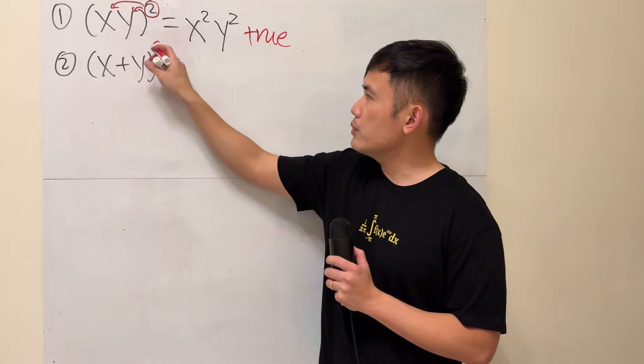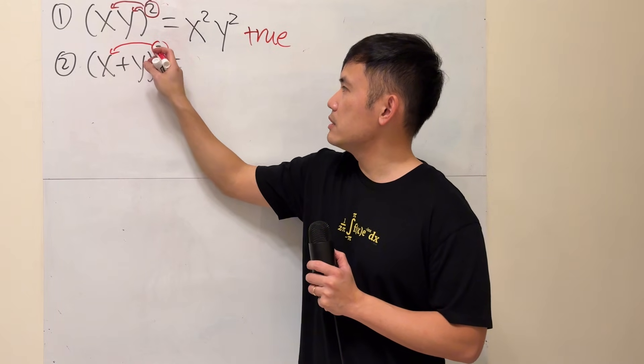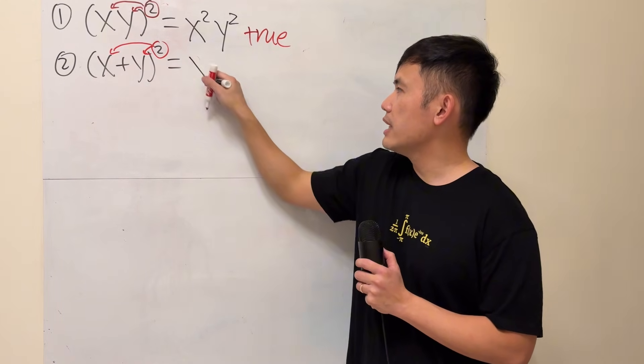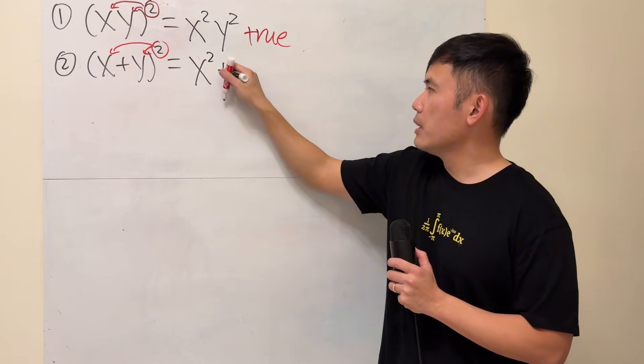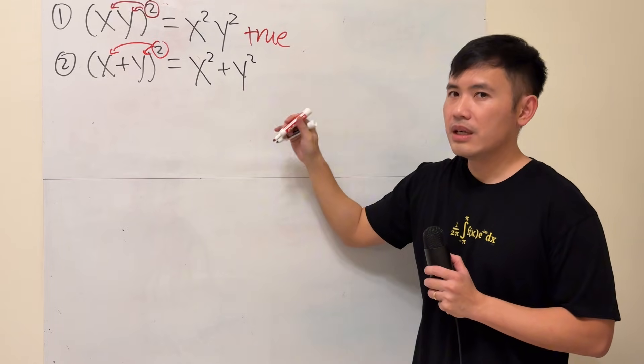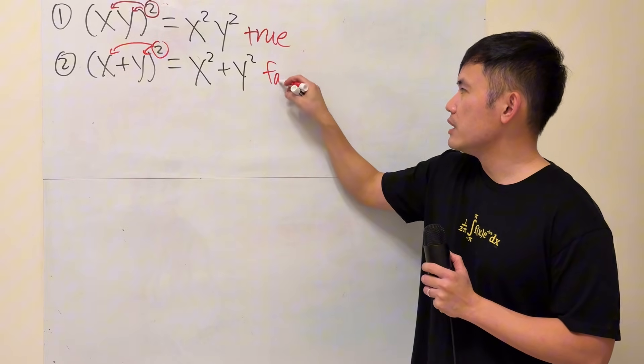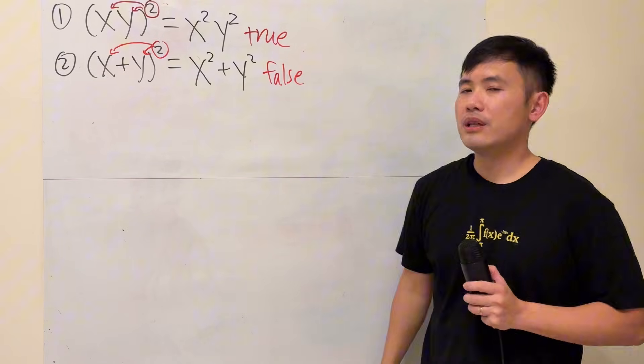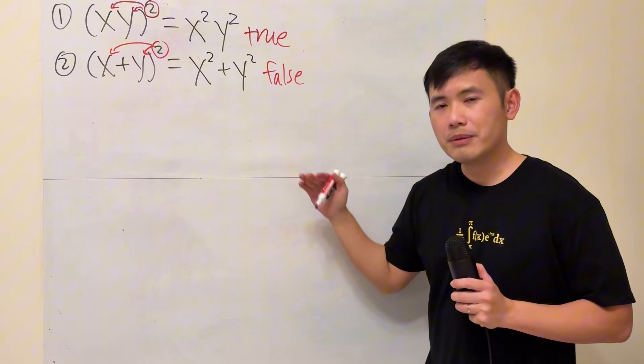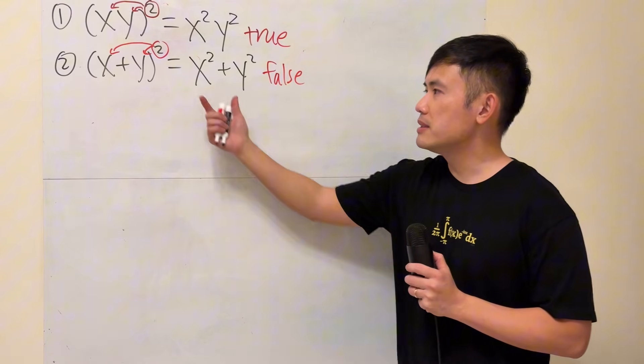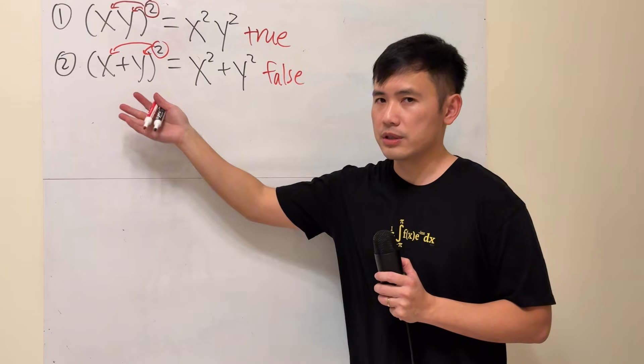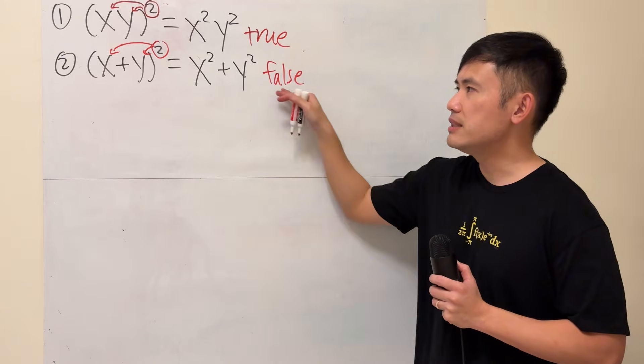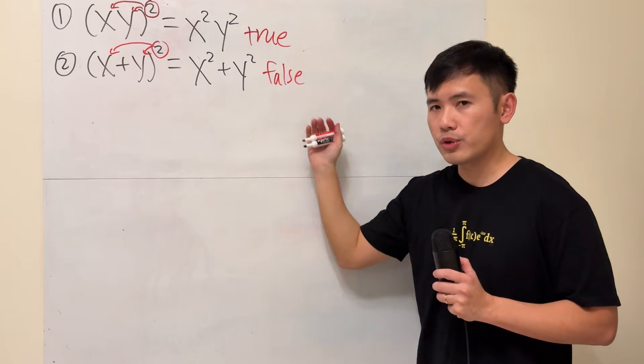However, if you try to do the same thing for the second one, just distribute the exponent and say the answer is x squared plus y squared, this right here unfortunately is false. When we say false, meaning it's not always true, because this is still true if you say x is equal to 0, y is equal to 0, but this is not an identity.